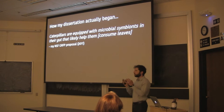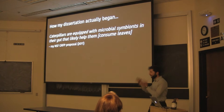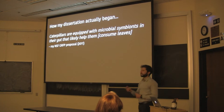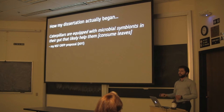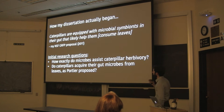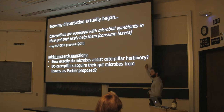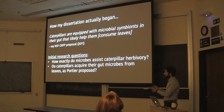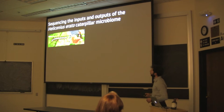I'll end by discussing the implications for animals in general and how asymbiosis might evolve. I've kind of given away the ending, but I don't want to deceive you into thinking I knew the answer from the get-go. In my GRP proposal I wrote that caterpillars are equipped with microbial symbionts in their gut that likely help them consume leaves — the 'likely' was really just to appease the reviewers. I basically assumed the answer was yes and moved on to what I thought were more interesting questions.